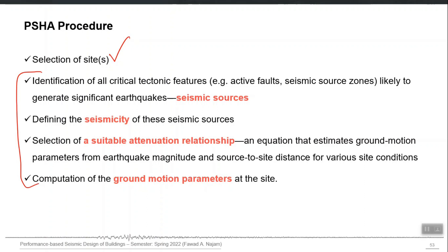The first step is to identify all critical tectonic features — those can be active faults, those can be some source zones, an area which has many past earthquakes but you do not know why. So you model it as a source zone or area source. Seismic source identification is the first step.